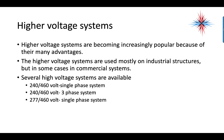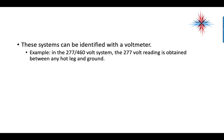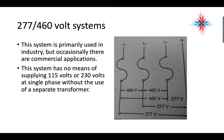There are also higher-voltage systems that are becoming increasingly popular, so be careful when working in a rooftop unit or any commercial or industrial building. These higher-voltage systems are used mostly in industrial systems, but also sometimes in commercial systems — you'll see them frequently in restaurants. Several high-voltage systems are available: 240/460-volt single-phase, 240/460-volt three-phase, and 277/460-volt single-phase systems. These systems can all be identified with a voltmeter. This system has no means of supplying 115 volts or 230 volts single-phase without a separate transformer, so you will never see lighting connected to it.